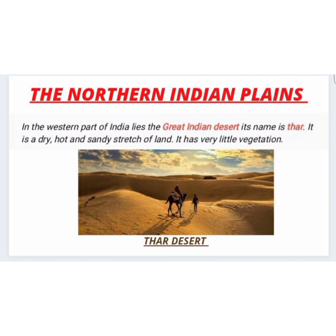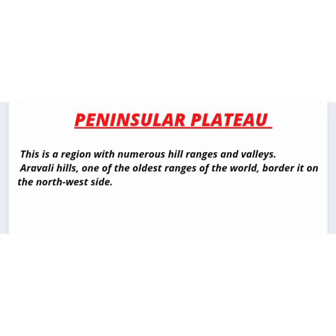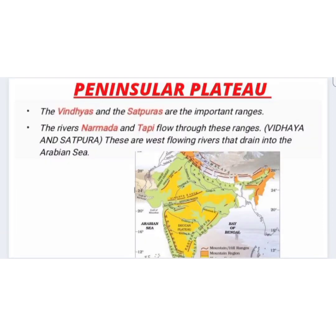Now we will study about the Peninsular Plateau. It lies to the south of the Northern Plains. It is triangular in shape and the relief is highly uneven — a region with numerous hills, ranges, and valleys. The Aravalli Hills, one of the oldest ranges in the world, border it on the northwest side. The Vindhyas and the Satpuras are important ranges. The rivers Narmada and Tapi flow through these ranges and are west-flowing rivers that drain into the Arabian Sea.